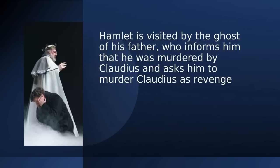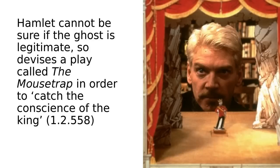Shortly after this, Hamlet is visited by the ghost of his father, Old Hamlet, who informs him that he was murdered by Claudius and asks Hamlet to murder Claudius as revenge. Now Hamlet cannot be sure if the ghost is legitimate — this could be some trick — so he devises a play called The Mousetrap in order to catch the conscience of the king. His basic idea is to depict the murder of Hamlet on stage, with Claudius pouring poison into the ear of the king, and then study how Claudius reacts to establish whether the king is guilty.